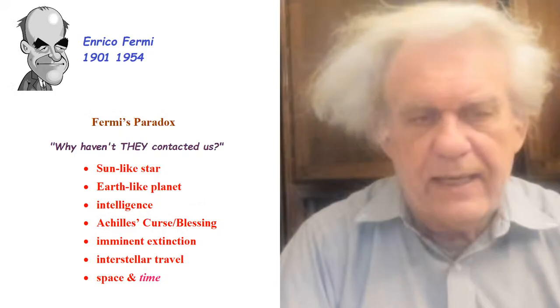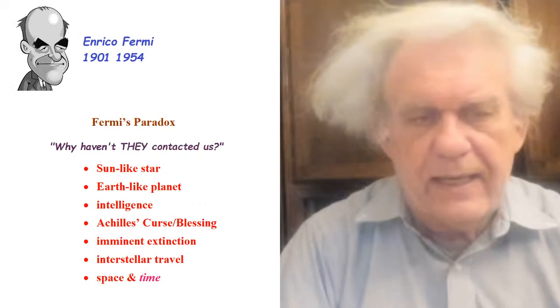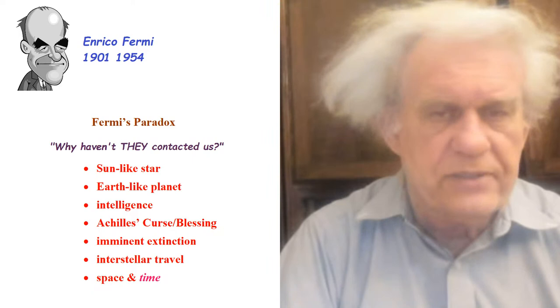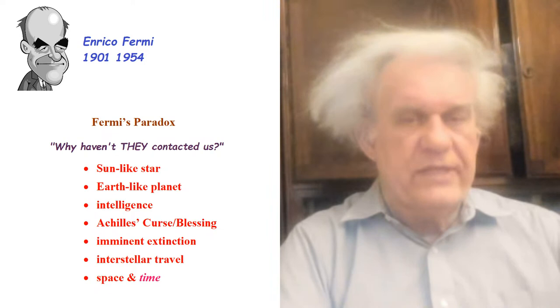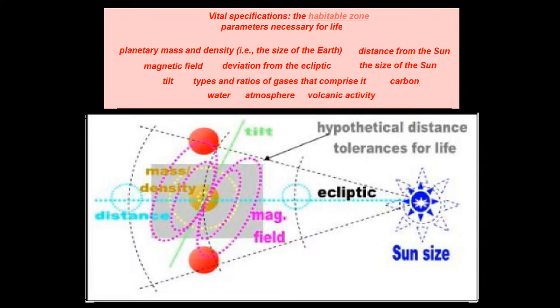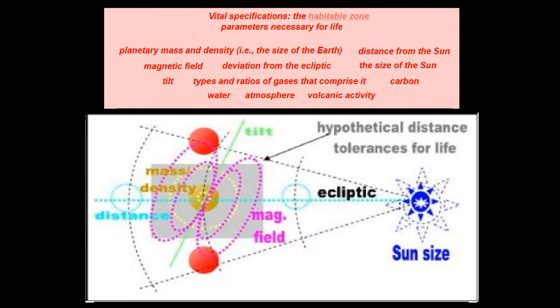Here are other habitable zone parameters to consider within the galaxy. If we're too far away from the sun, or too close, life would probably not have developed. It would have been either too hot or too cold. Maybe if we're above or below the ecliptic — and the mass density of the planet, whether bigger or smaller, would create different gravity.